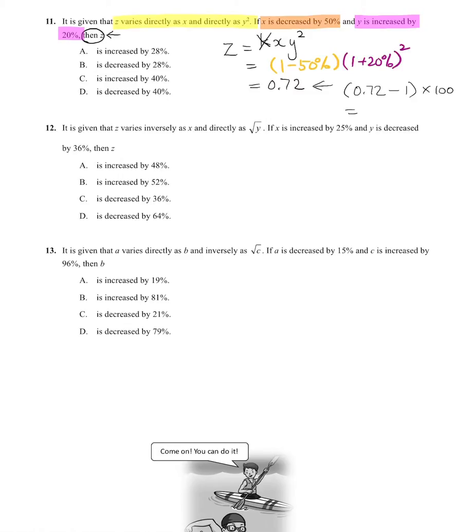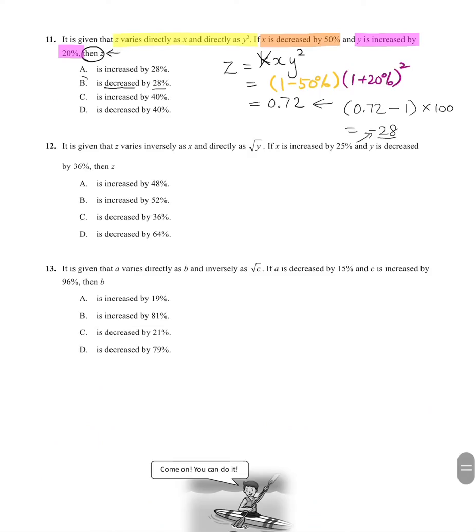The answer in this case is 0.72 minus 1, then times it by 100. That's for the percentage change part - you minus 1 and then times 100. You see that it's negative 28, so negative for decrease and 28 is the answer you're looking for. It's a decrease by 28%, which is B.